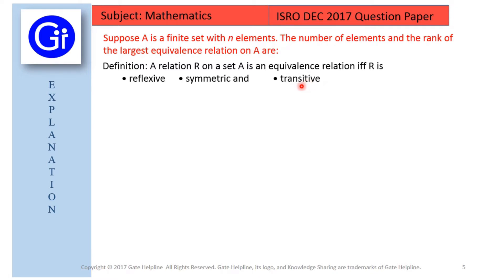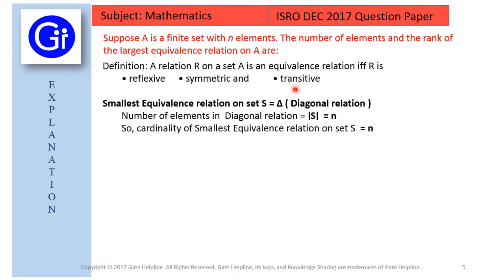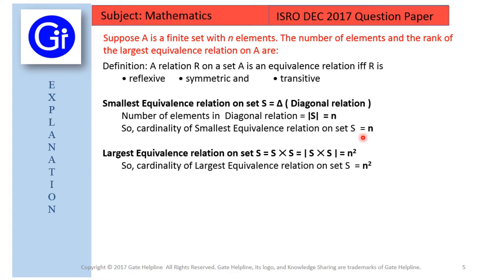In this example, we are considering that you know what reflexive, symmetric and transitive relations are. The smallest equivalence relation on set S is the diagonal relation, with number of elements equal to n. So the cardinality of the smallest equivalence relation on set S is n. Similarly, the largest equivalence relation on set S is S cross S, that is n raised to power 2, or the cardinality of the largest equivalence relation is n².